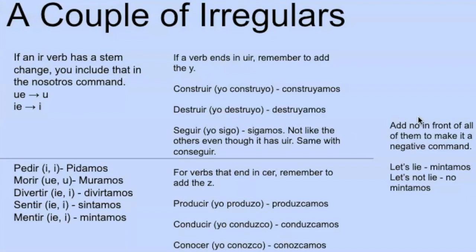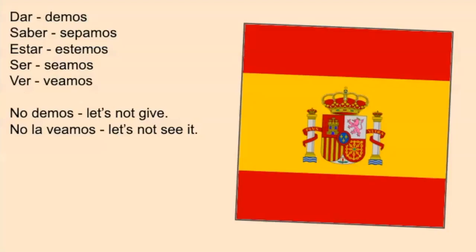To make it negative, just put 'no' in front — so 'mintamos' becomes 'no mintamos,' 'let's not lie.' Simple. Now here are some truly irregular verbs — and these are also irregular in the subjunctive. 'Dar' is 'demos.' 'Saber' is 'sepamos' — not 'sabamos,' it's 'sepamos' with a P. 'Estar' is 'estemos.' 'Ser' is 'seamos.' And 'ver' is 'veamos.'